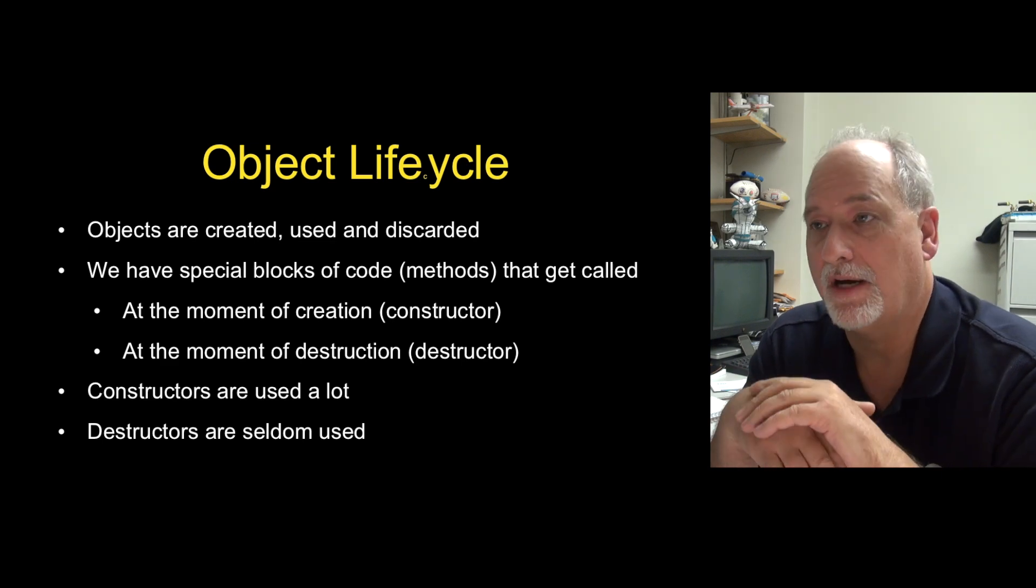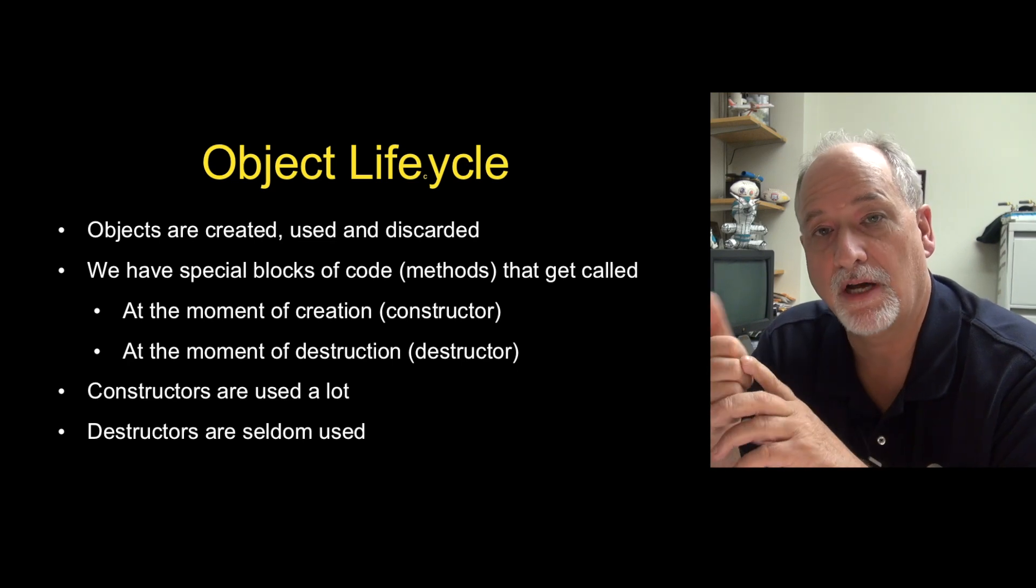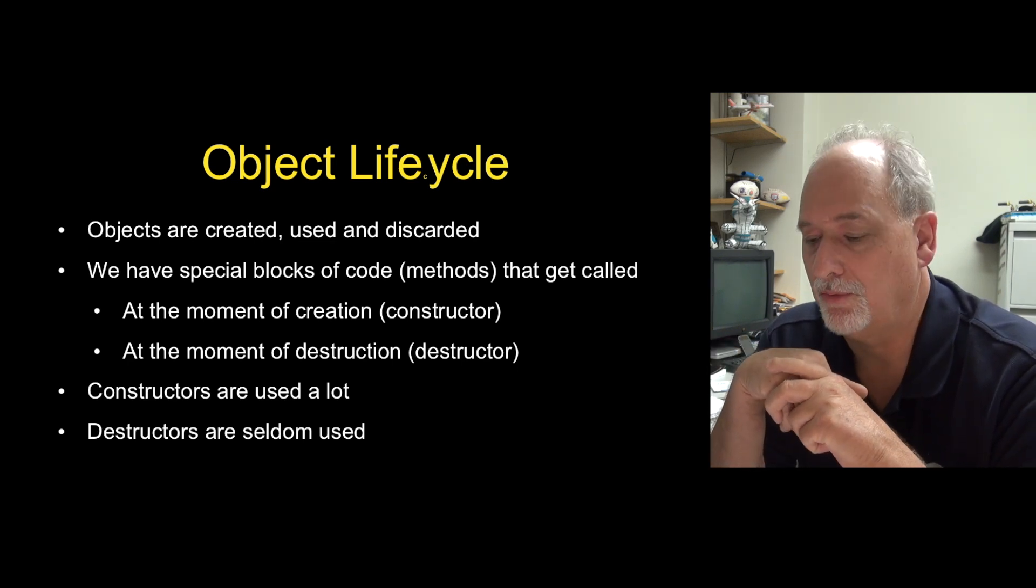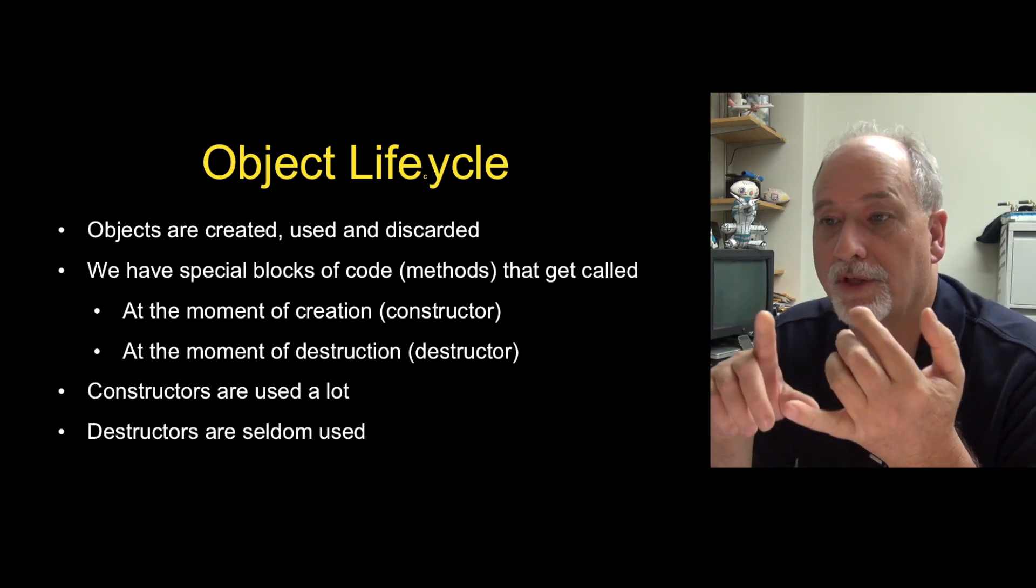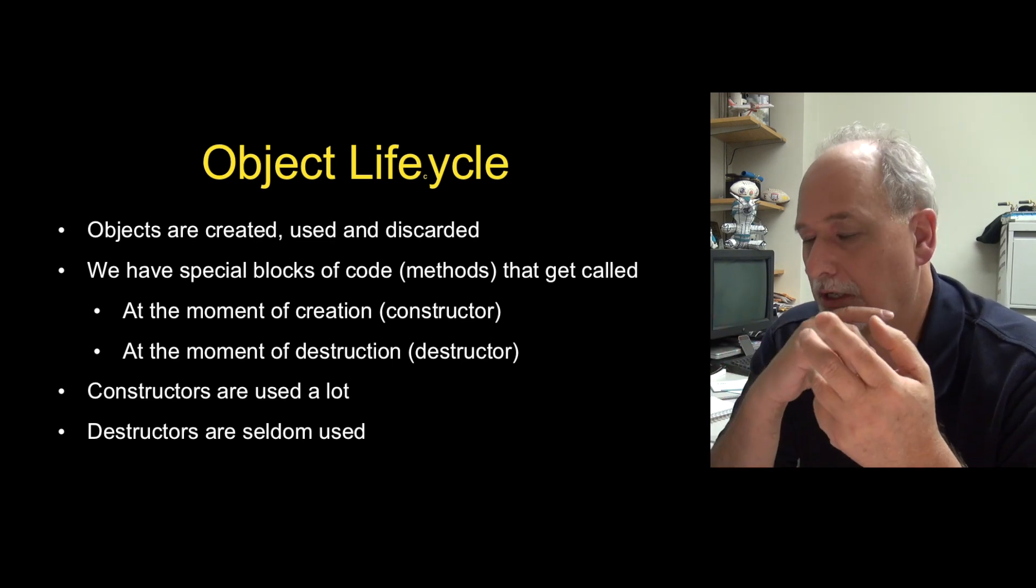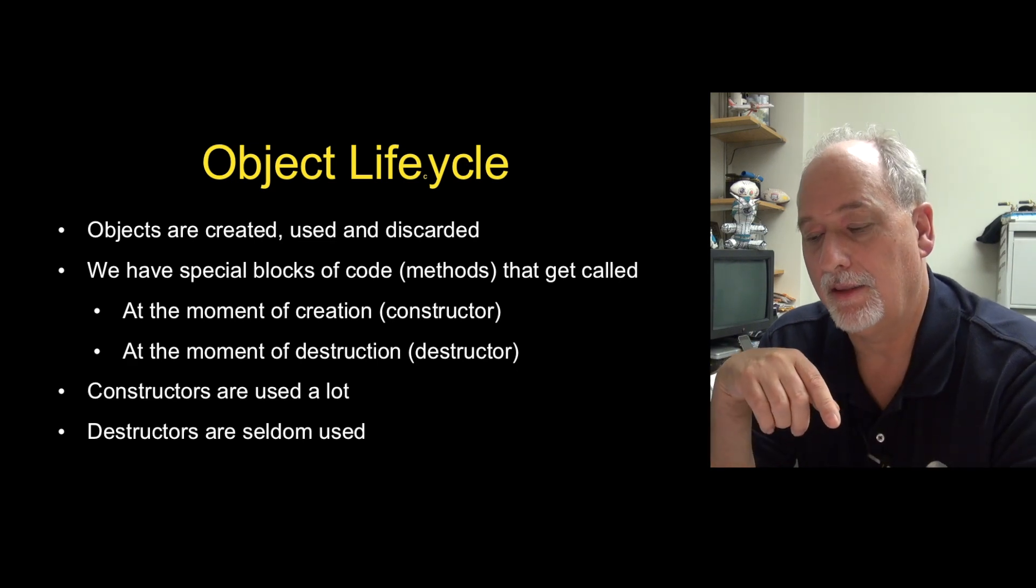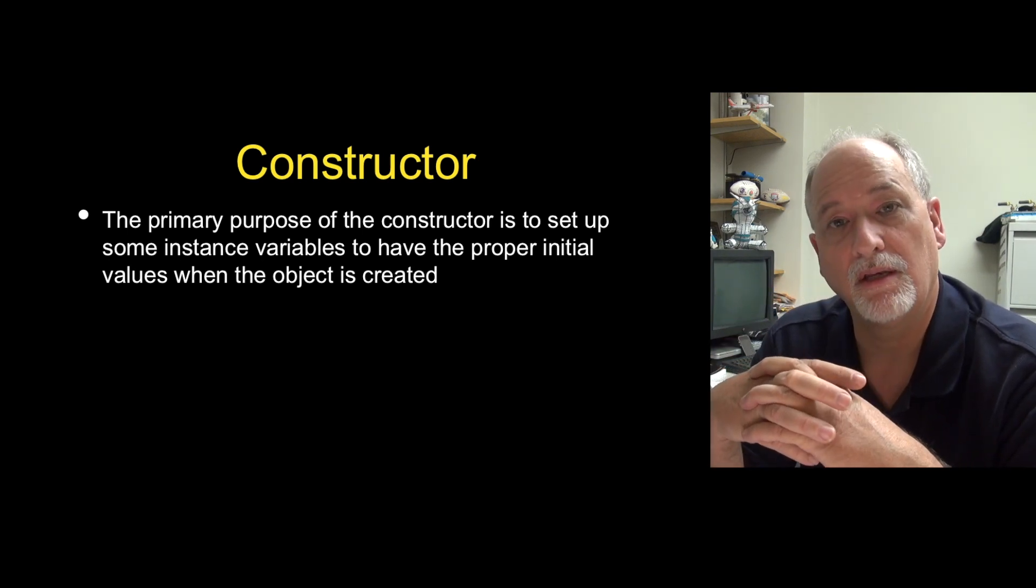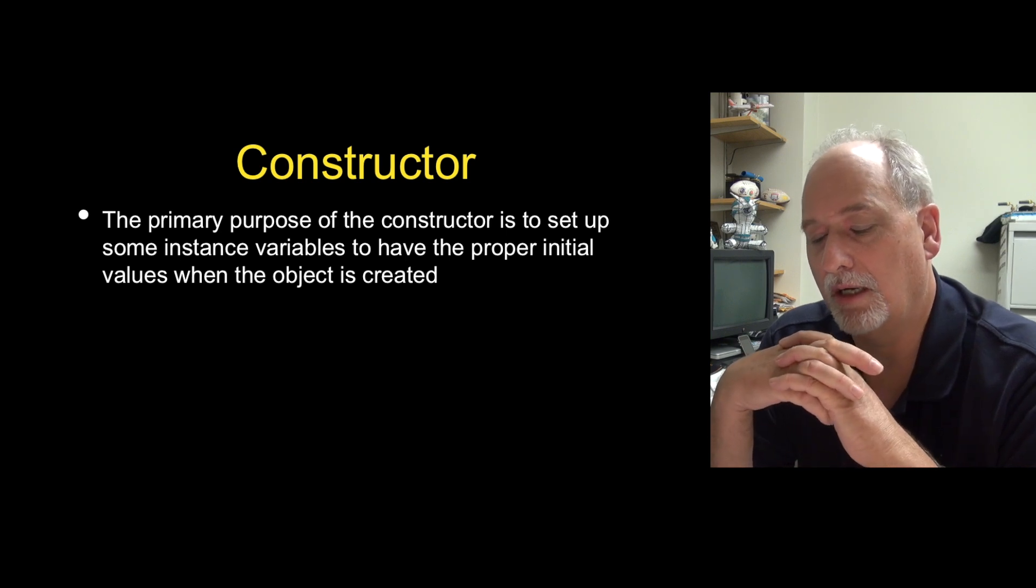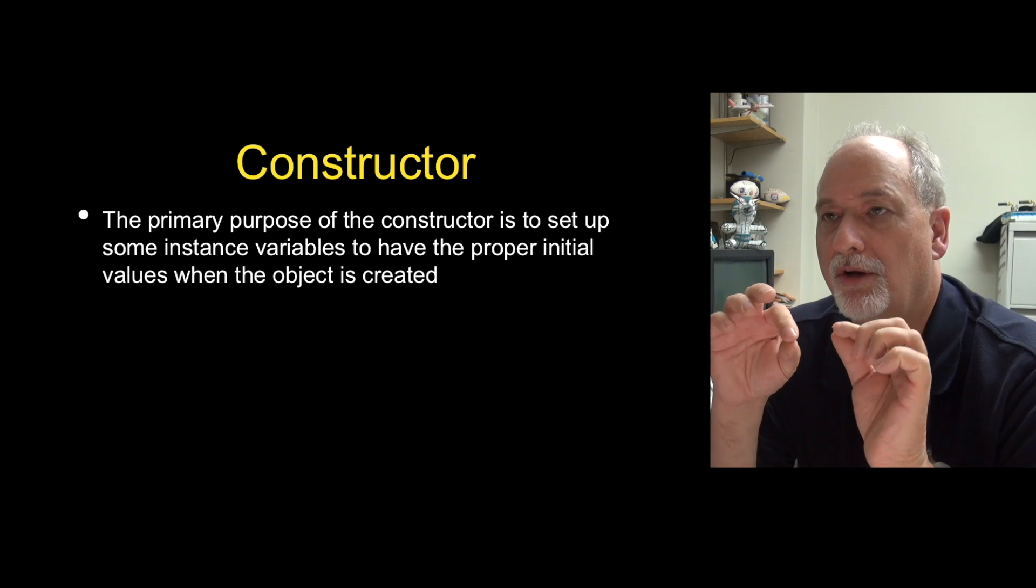As the writers of objects, we have the ability to insert ourselves at the moment of object creation and at the moment of object destruction. We make special functions that we call the constructor, the object constructor or the class constructor, and the destructor. We don't actually explicitly call them. They're called automatically by Python on our behalf. The constructor is much more commonly used. It's used to set up any initial values of variables if necessary. Destructors are used very rarely.